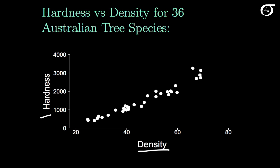So the hope is that we will be able to use density to help predict hardness. Now let's fit a least squares regression line through these points. We can do the calculations by hand, but typically we're going to rely on a computer to do it.